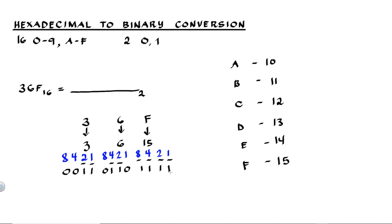So 36F in hex is equivalent to 0, 0, 1, 1, 0, 1, 1, 0, 1, 1, 1, 1 in binary. We can omit the leading zeros because leading zeros before non-zero numbers are not significant.